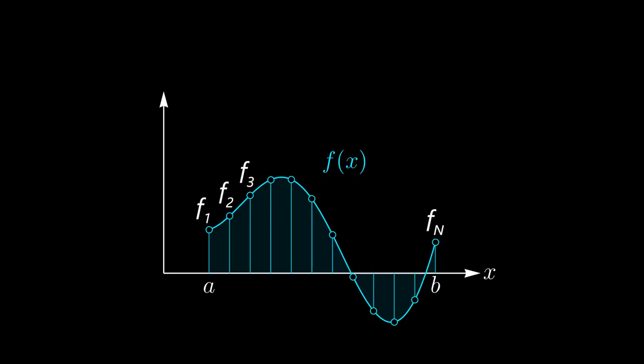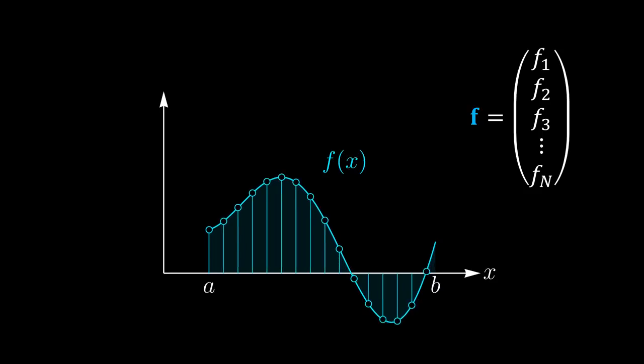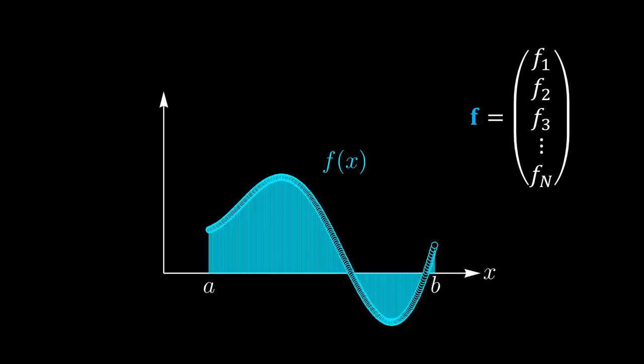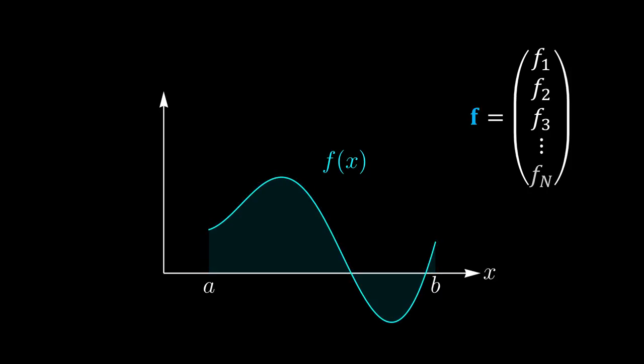Then you could say that the function is fully described by a collection of n values corresponding to f₁, f₂, all the way up to fₙ, which we can write as a vector. Of course, the approximation would have been better if we had used more sampling points, that is, more dimensions in our vector. In the limit in which the number of points is infinite, you would be exactly describing the functions as an infinite dimensional vector.